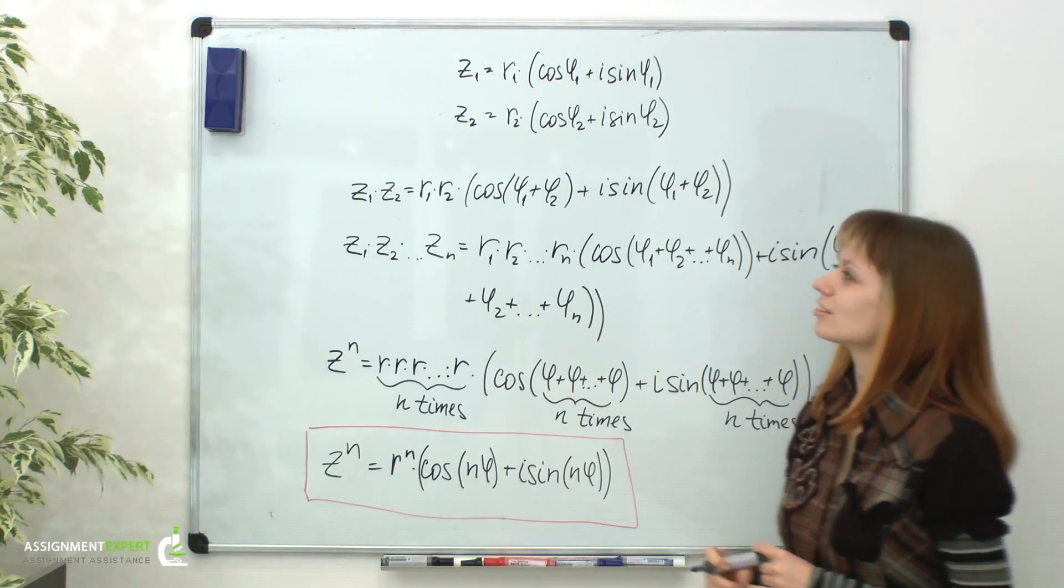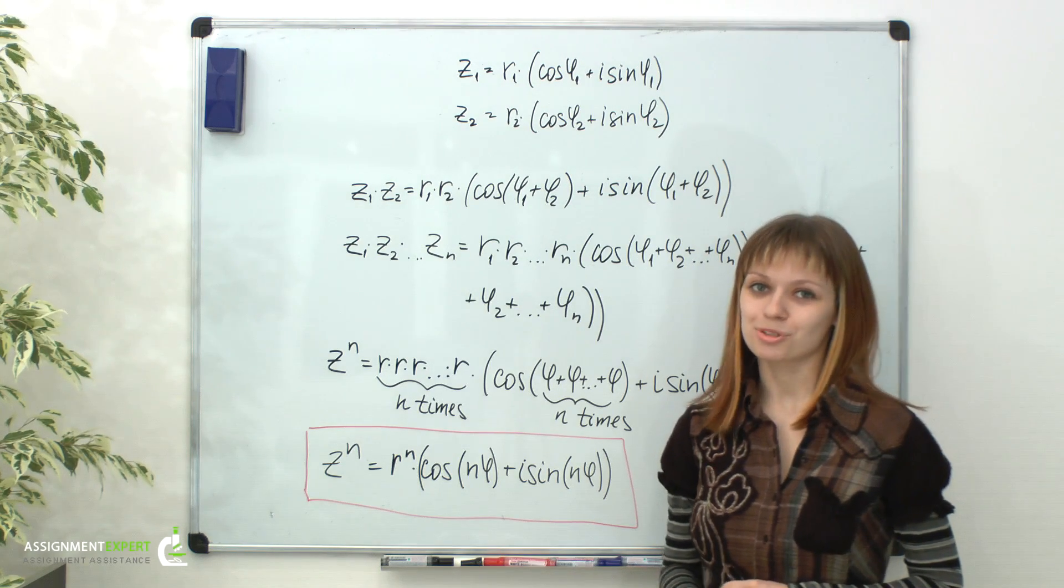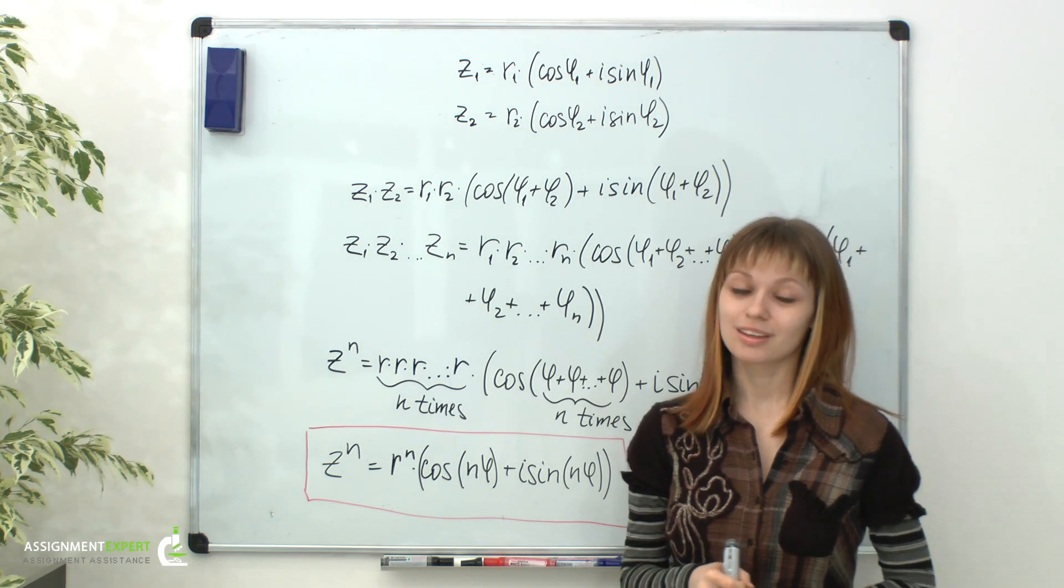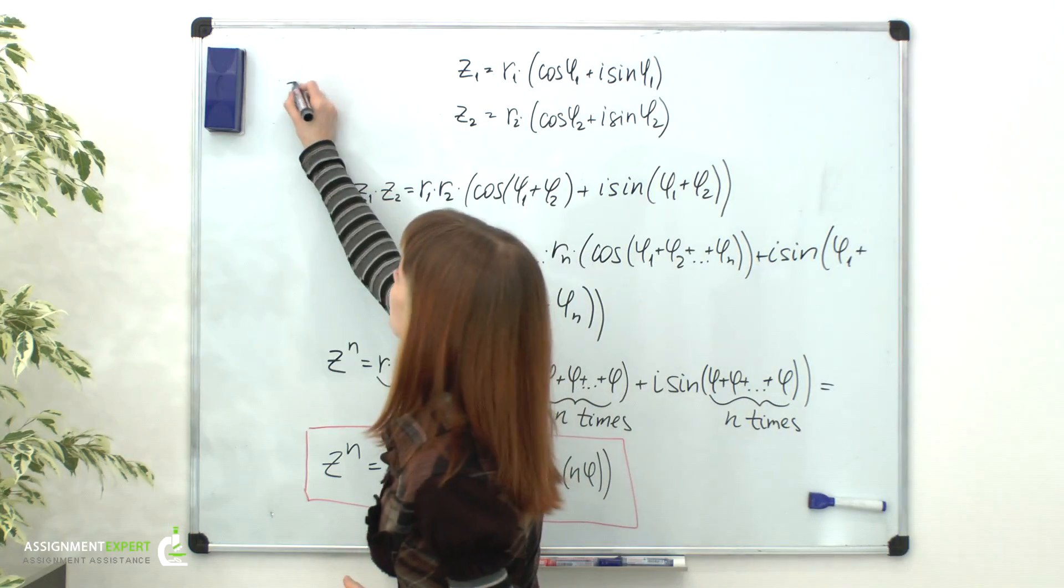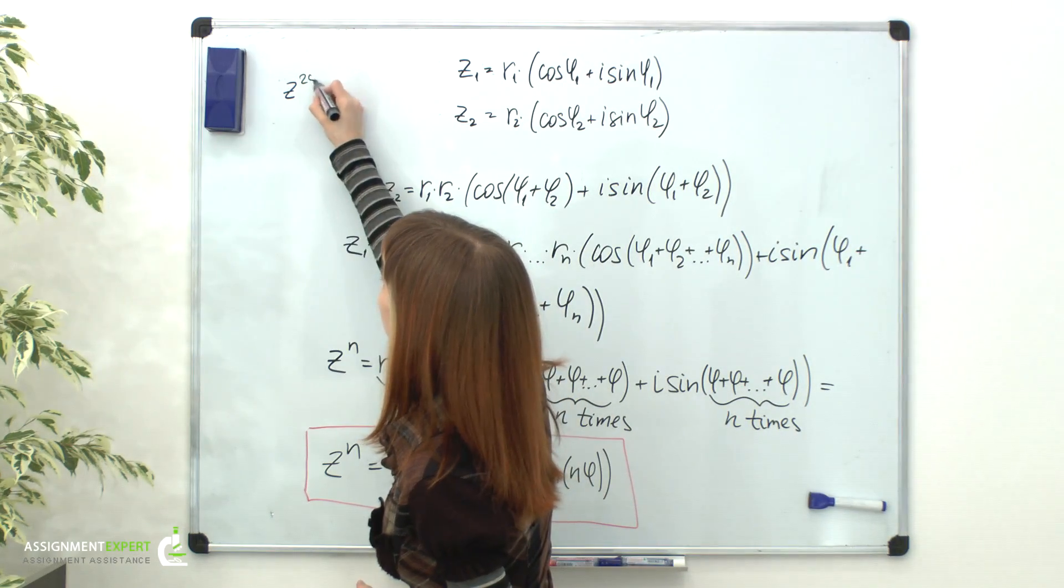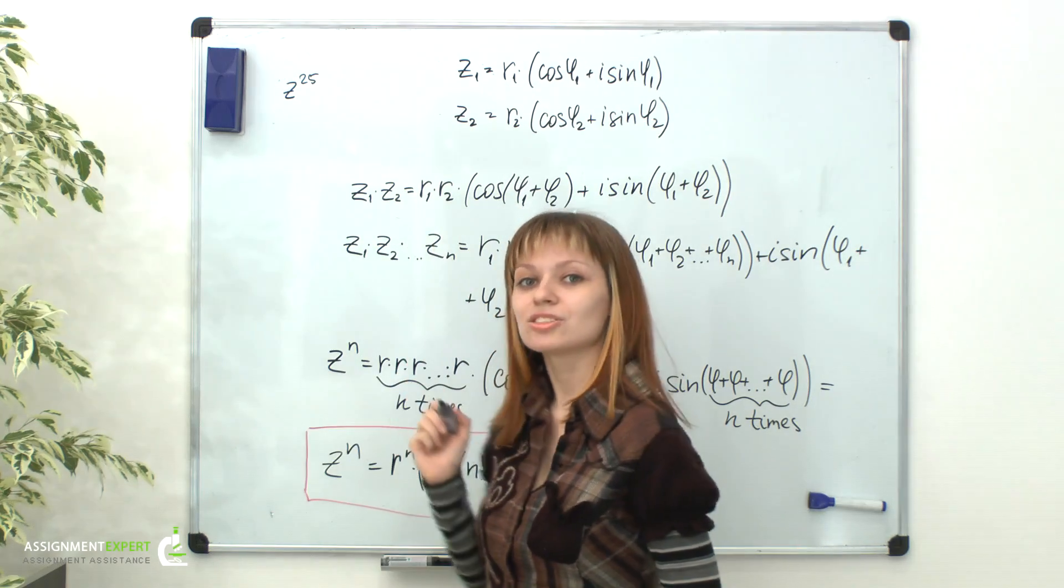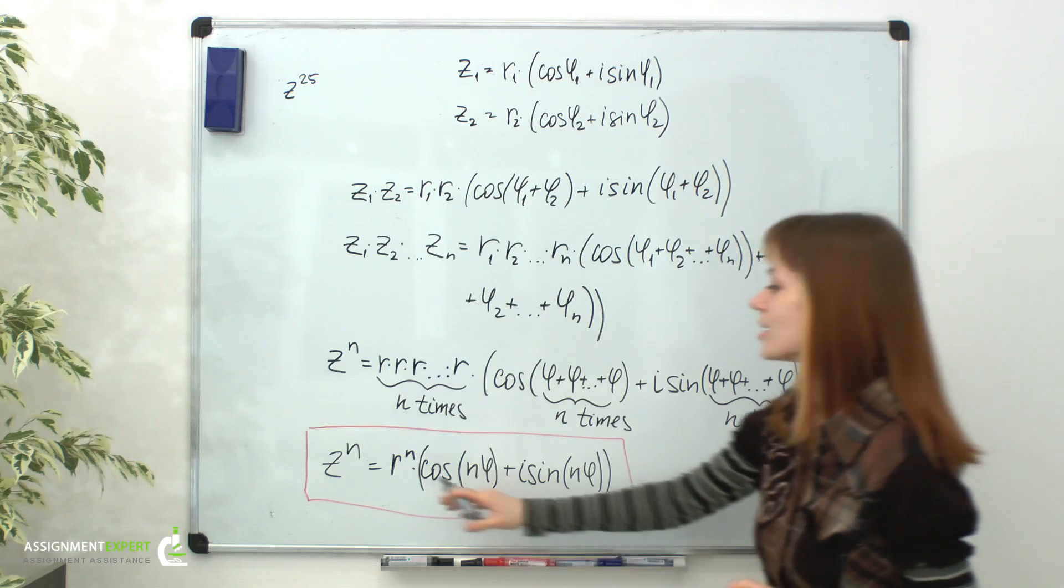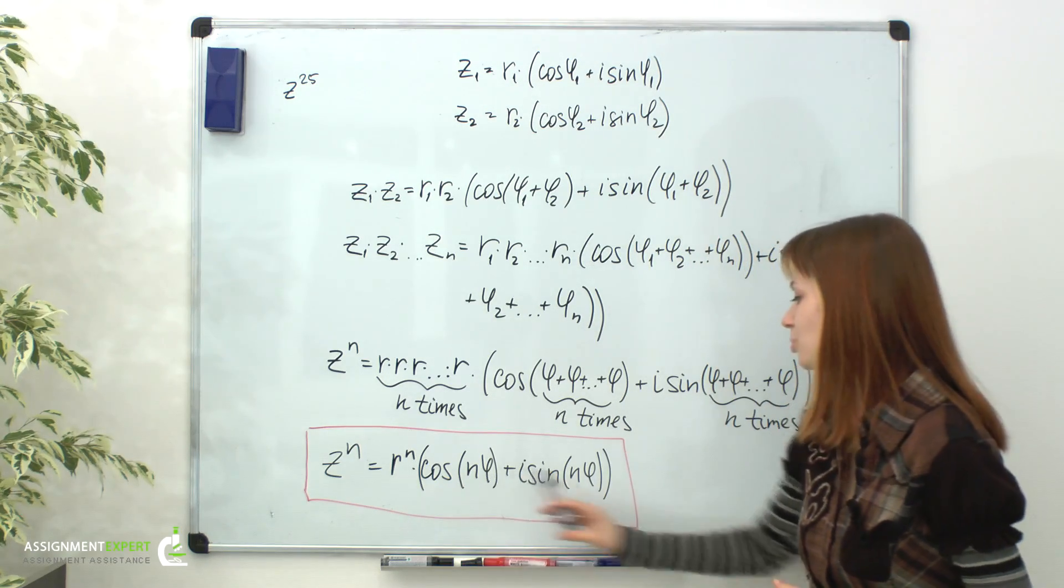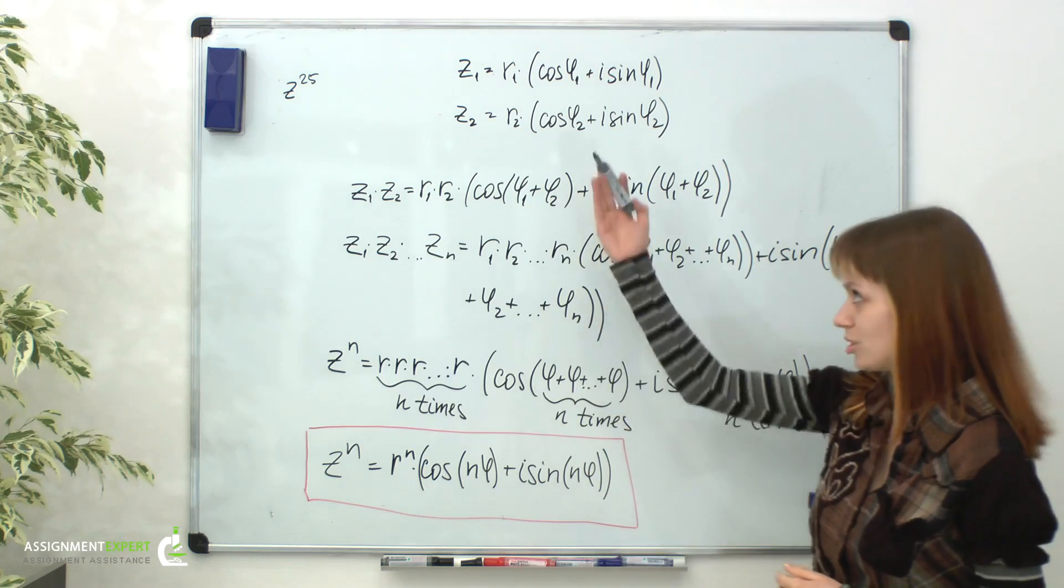It's extremely convenient to calculate integer powers of complex numbers given in trigonometric form. To appreciate this statement, let's think that we need to find 25th power of complex number. If it is given in trigonometric form, then using De Moivre's formula, we'll simply need to raise its module to 25th power and multiply its argument by 25.